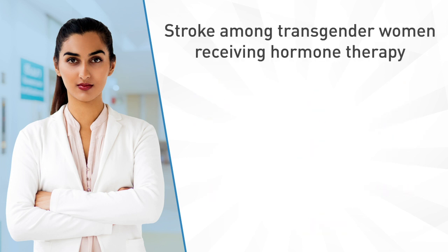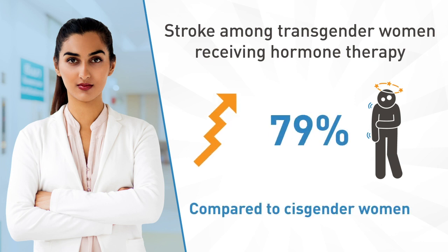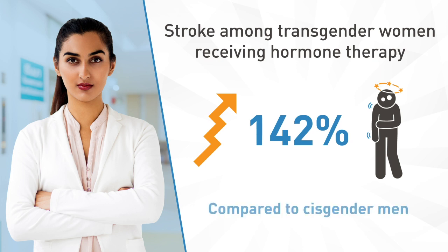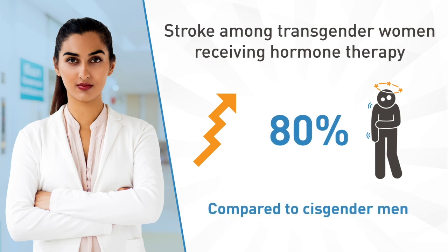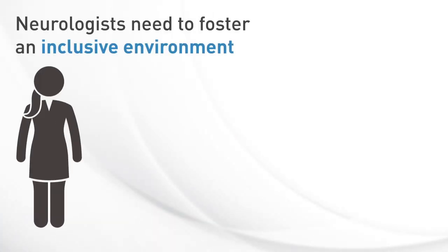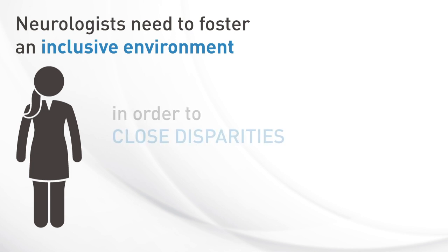For example, one study found the incidence of stroke in transgender women receiving hormone therapy was 142% higher than cisgender women and 80% higher than cisgender men. Neurology providers need to foster an inclusive environment in order to close these disparities.